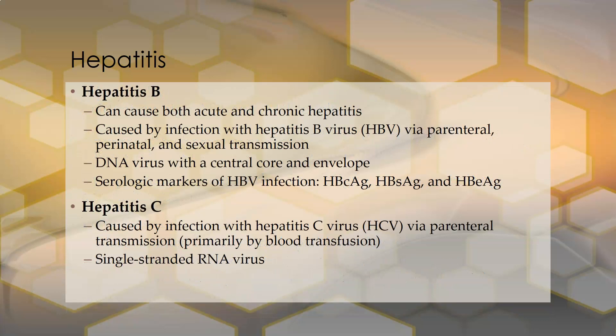Hepatitis B can cause both acute and chronic hepatitis. It is caused by infection with the hepatitis B virus via parenteral, perinatal, or sexual transmission. Parenteral would be through puncture of the skin, like transfusions or IV drug use. It is a DNA virus with a central core and an envelope. Serologic markers for hepatitis B infection include the hepatitis B core antigen, the hepatitis B surface antigen, and the hepatitis B envelope antigen.